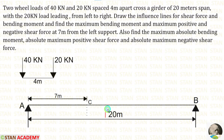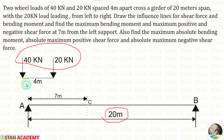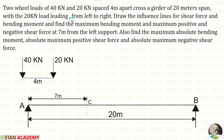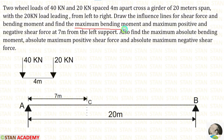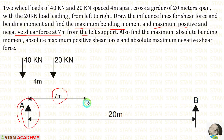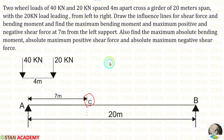In the question, the length of the beam is given as 20 meters. Two point loads are given, spaced at 4 meters. These loads move from left to right and the 20 kN load is leading. We have to calculate the maximum bending moment and maximum positive and negative shear force at 7 meters from the left support. So at 7 meters from the left support, let us mark a point — that is point C.